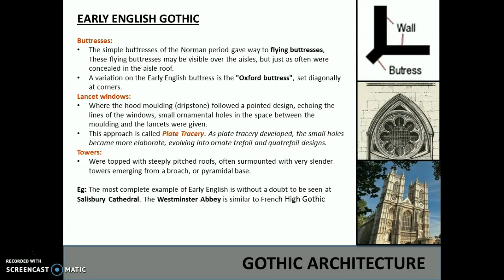The simple buttresses of the Norman period gave way to flying buttresses. These buttresses may be visible over the aisles, but just as often were concealed in the aisle roof. A variation of the Early English buttress is the Oxford buttress, set diagonally at corners. The lancet windows had wood moulding — the dripstone — which followed a pointed design echoing the lines of the windows.